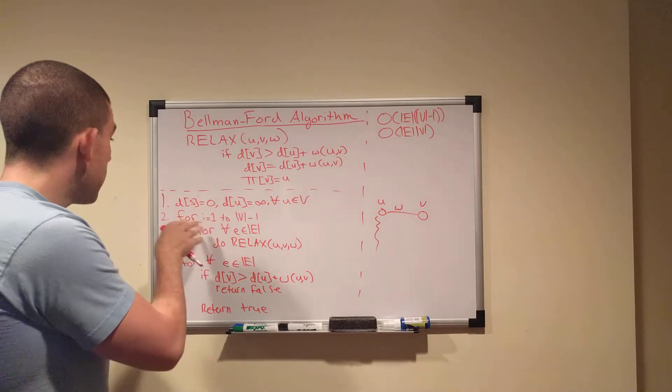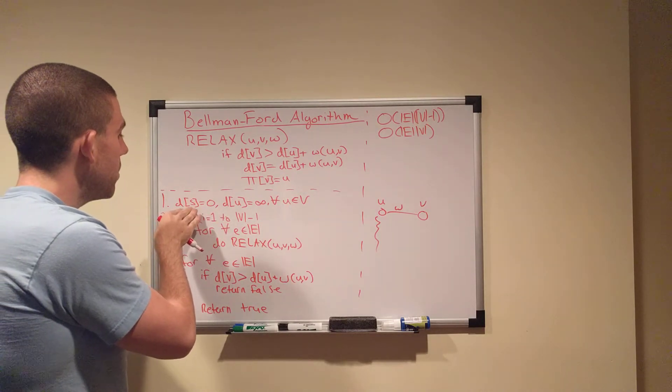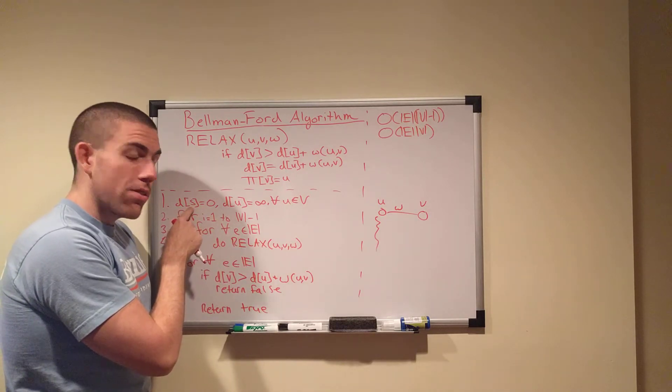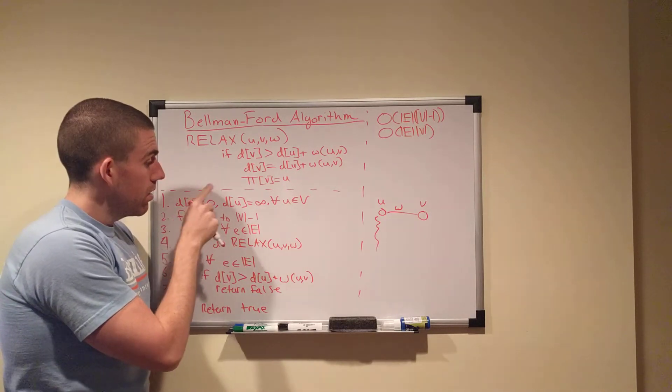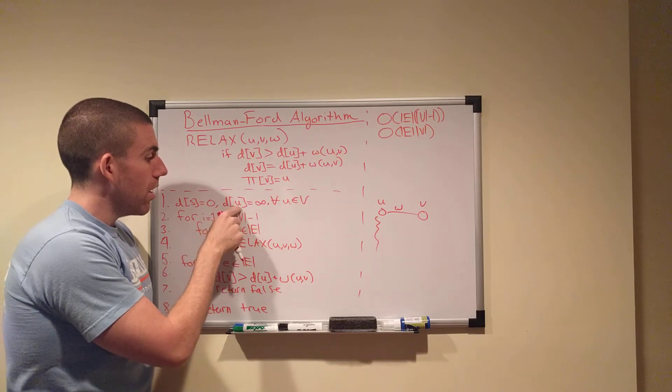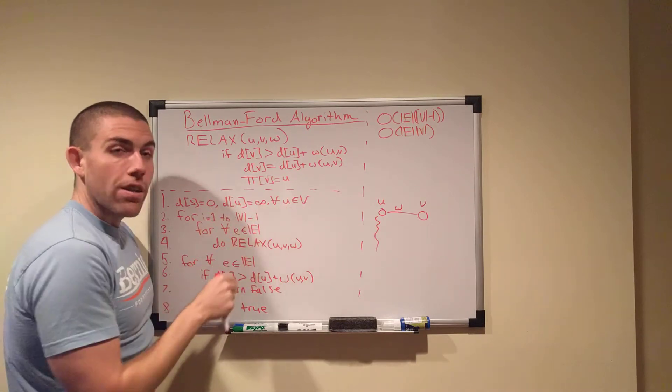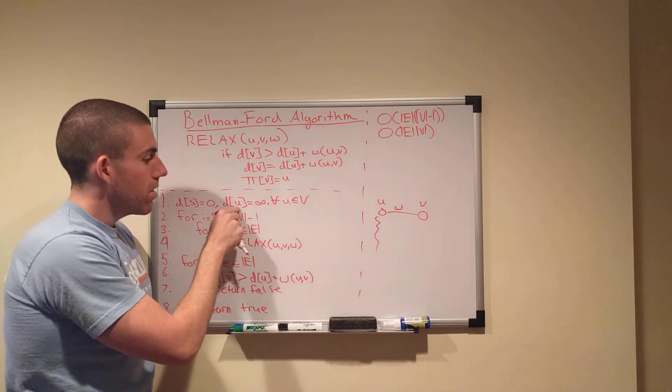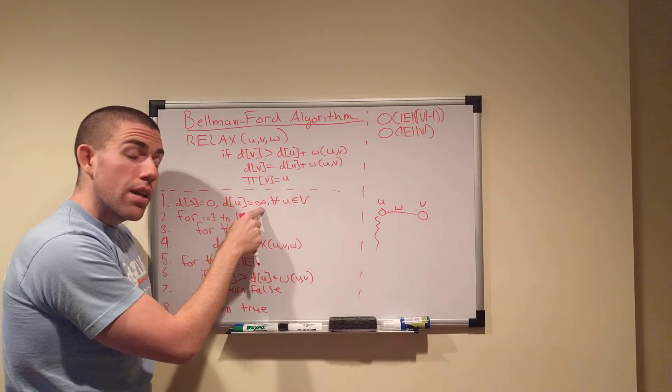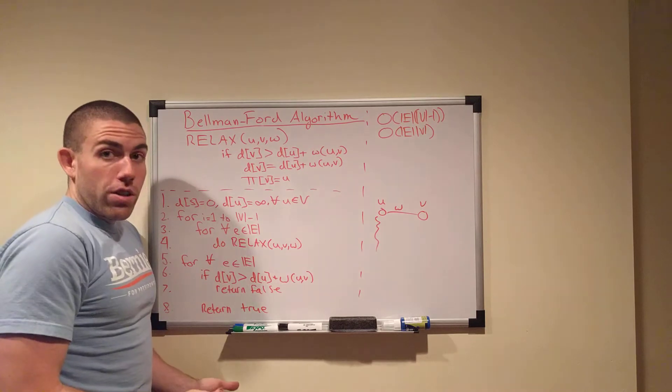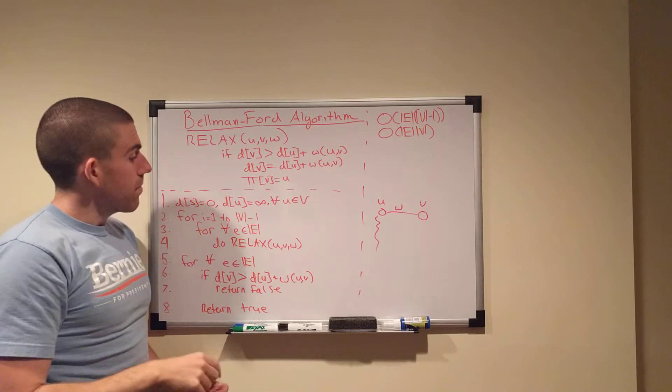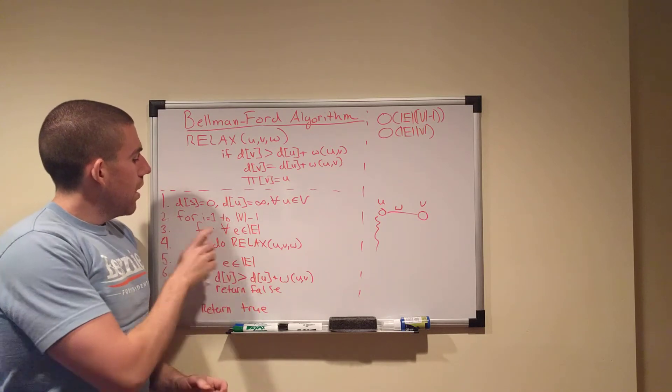In the beginning, what we do is we take our distance array, we set the distance of our source vertex S to 0, and the distance of every other vertex in the set of vertices, so for all U and V, the distance of U is set to infinity. And that's just because we haven't looked at them yet, so we don't know. So, as far as we know, they're indefinitely far away from S.